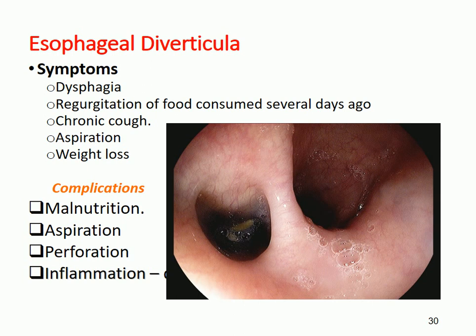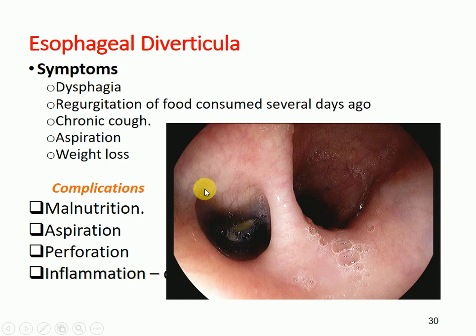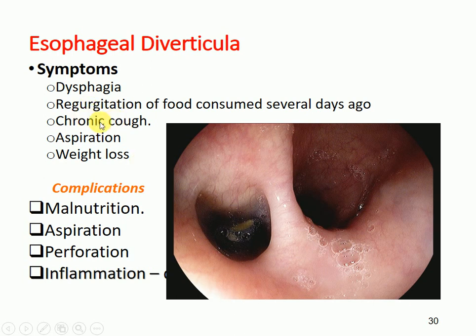Another symptom is regurgitation of foods consumed several days ago. Because this is a diverticulum, food stays inside it, and when the mass is compressed it causes regurgitation, and the food returns to the esophagus. Someone may also experience chronic cough, possibly due to aspiration.